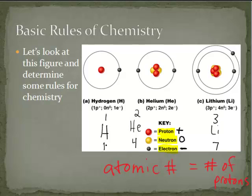If we now look at the atomic mass number — in this case it's one for hydrogen, four for helium, and seven for lithium — what adds up to those values? In the case of hydrogen, you have one proton, atomic number of one. Helium has two protons and two neutrons, that equals four. Three protons and four neutrons equals seven.